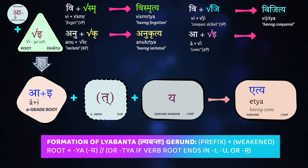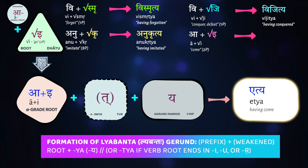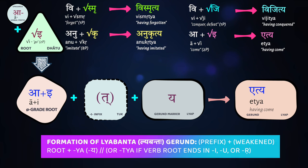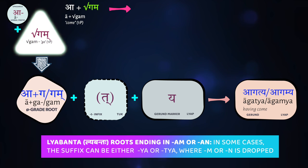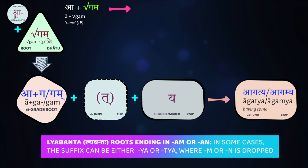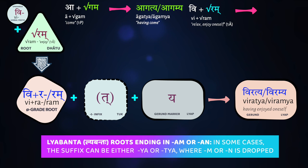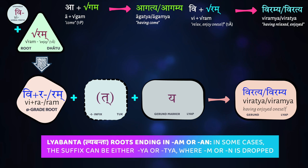Then there are some roots ending in am where either ya or tya can be added to the weakened root. For aa plus gam (to come), we can have either agatya or agamya — both are possible, both mean 'having come.' Vi plus ram (to relax/enjoy yourself) can be either viramya or viratya, both meaning 'having enjoyed yourself.' That's how the lyabanta gerunds are formed.